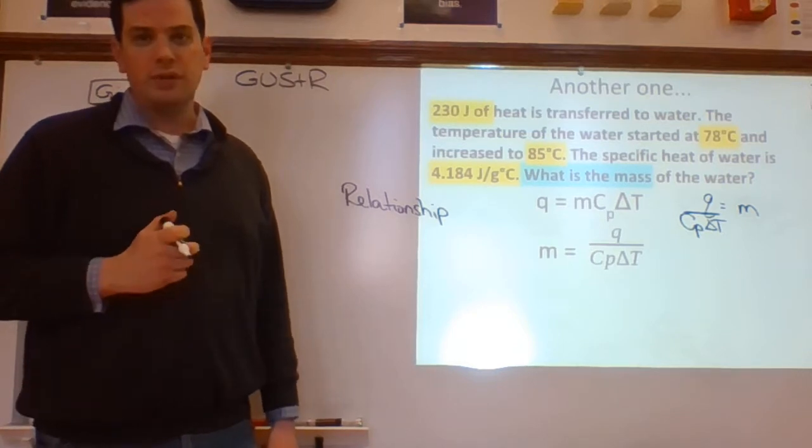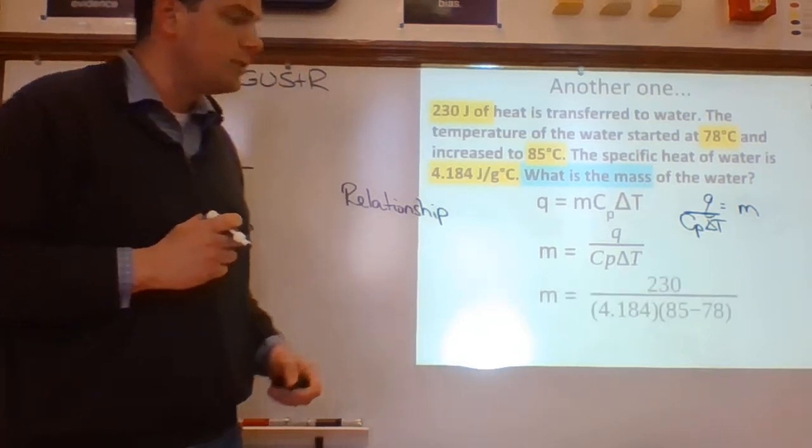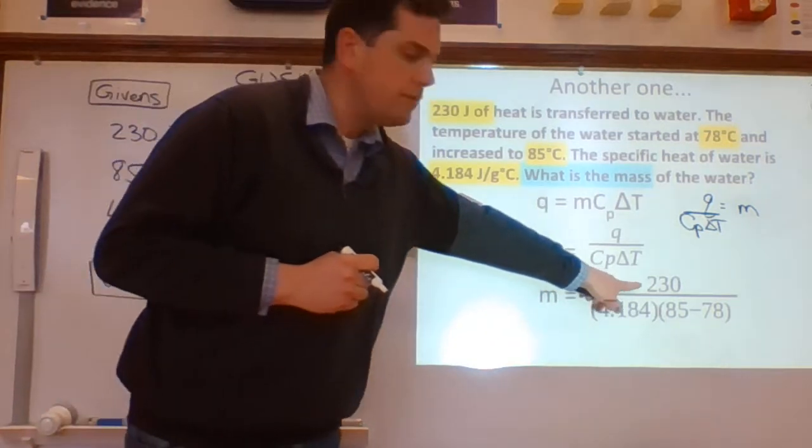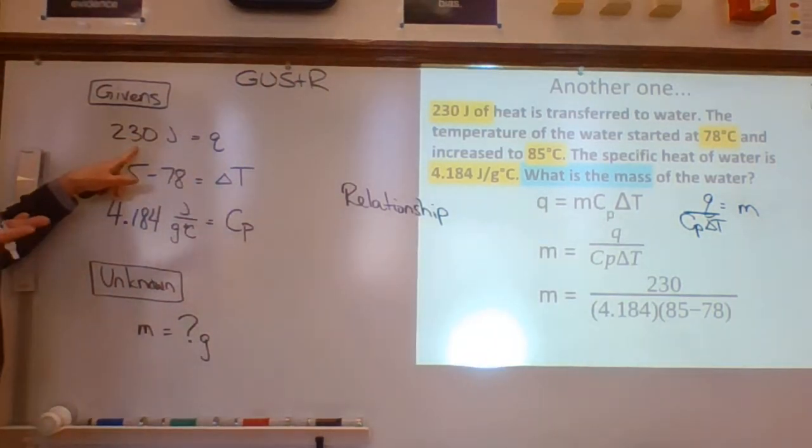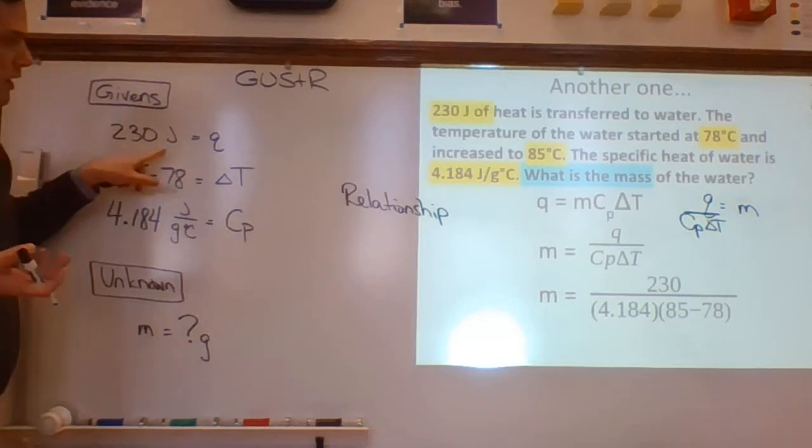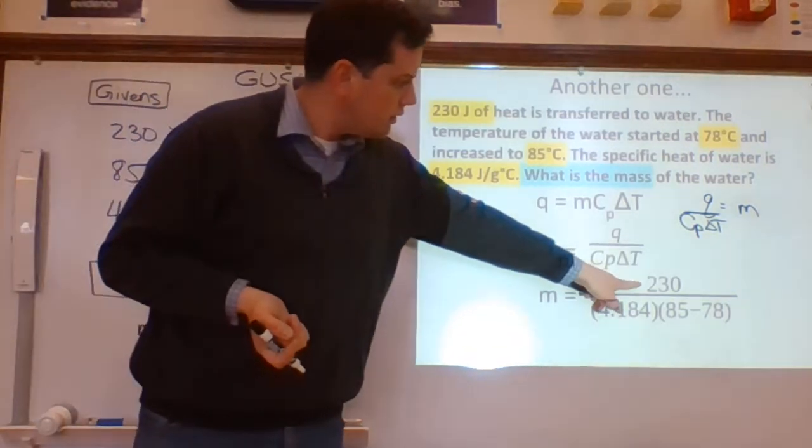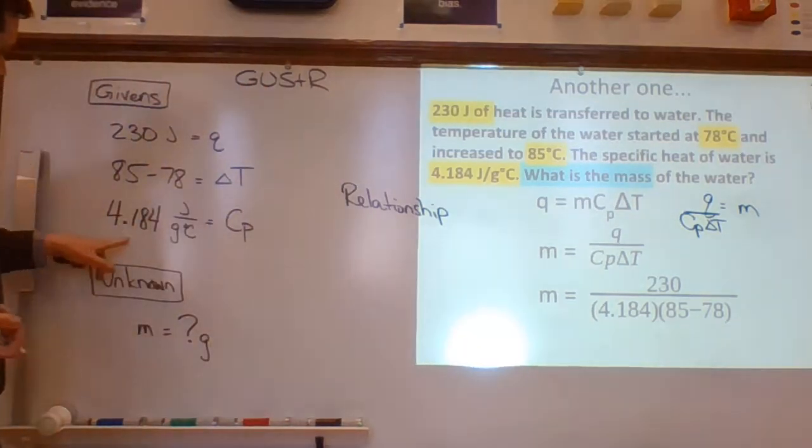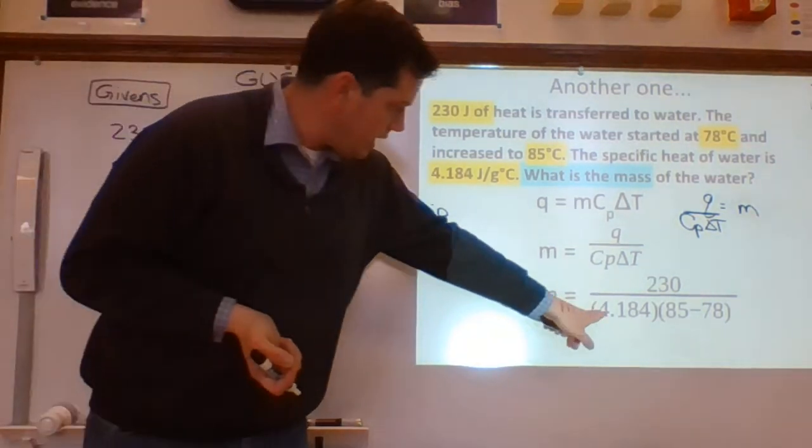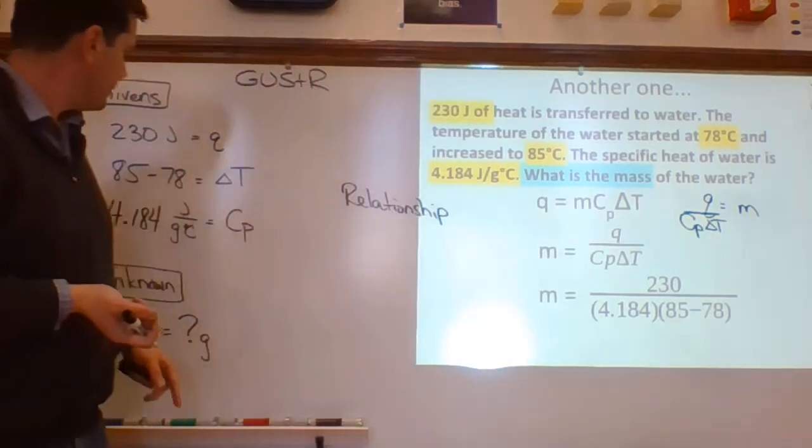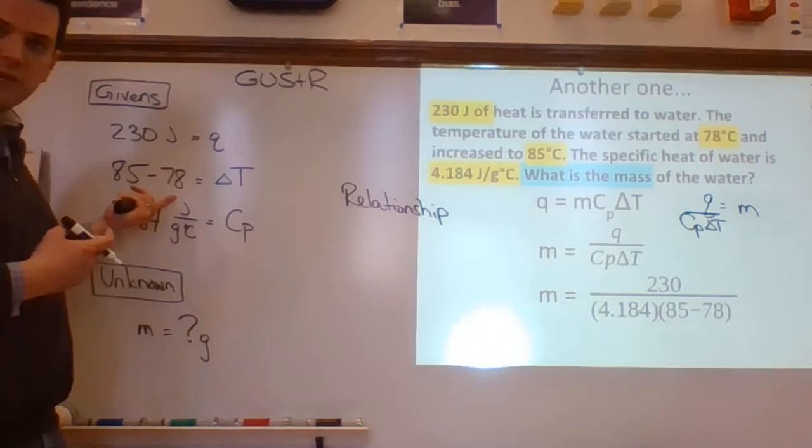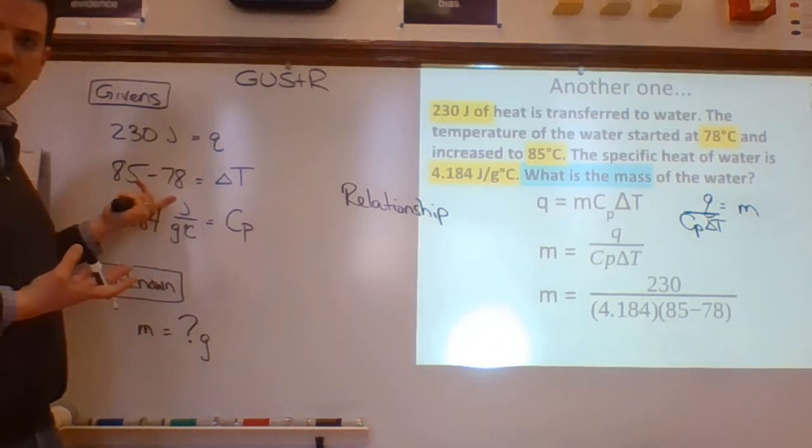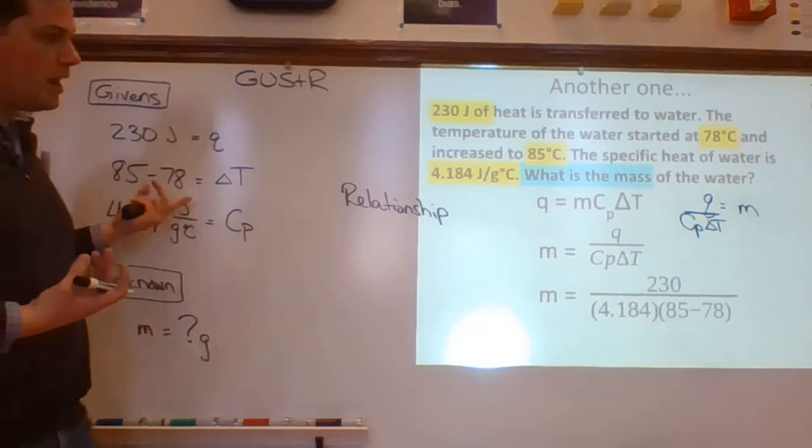When you plug your numbers in, this is what it looks like. 230 goes in for Q. I got that from right up here. All I did when you make a list, all you got to do is find your Q and go, oh, there it is. And you plug in your 230. And then there's my Cp. See it? Put that one right there, 4.184. And then my delta T. Like I said, that's seven, right? So if you were to take 85 minus 78, you could actually do that in your calculator ahead of time or in your head ahead of time and plug that in right here. You could just put seven right there.